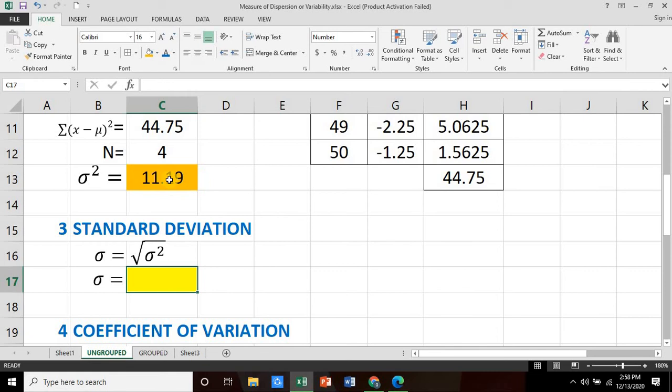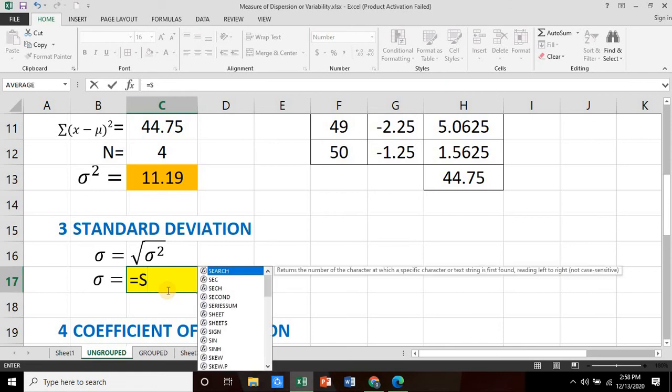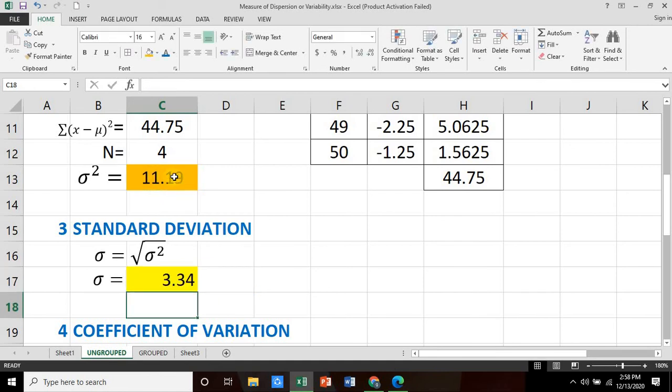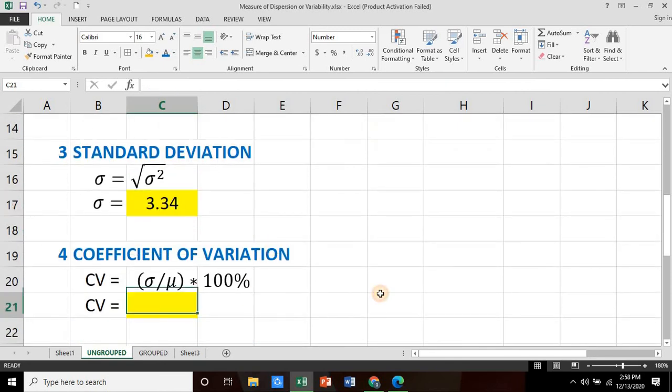For our standard deviation, we simply take the square root of our variance. So this is equals SQRT, open parenthesis, of the variance value, and that would be 3.34. That would be our standard deviation.